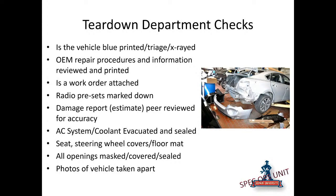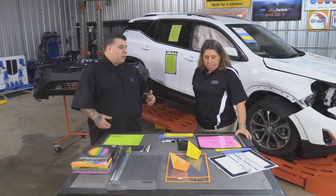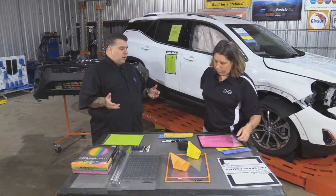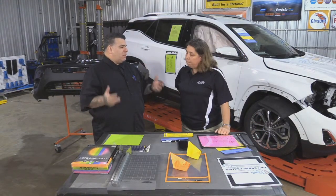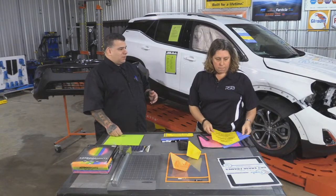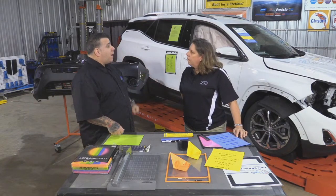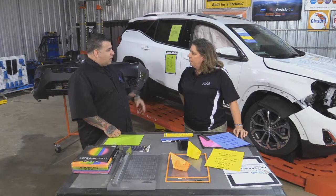I want to make sure OE repair information has been pulled and is available for the technician — not printed into a stack 27 pages thick, but in a digital repository. I want to make sure the work order is in the file with all radio presets marked down, and seat positions noted. Marking radio presets is one of the simplest things that can prevent issues at delivery — so many people don't know their radio stations or how to preset them. I even have on the final checklist to check the child safety lock, because you can hit it with a towel and the customer suddenly can't open their back door.